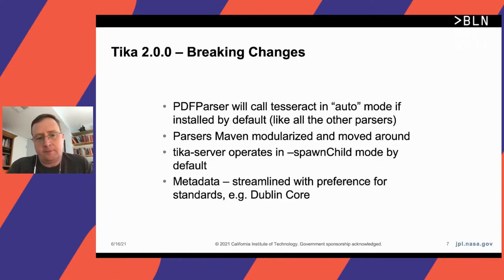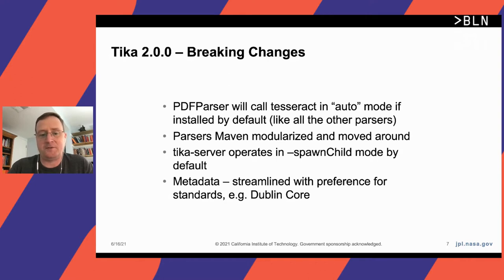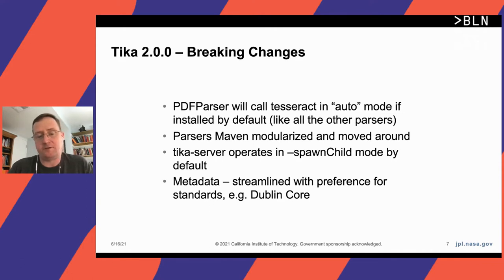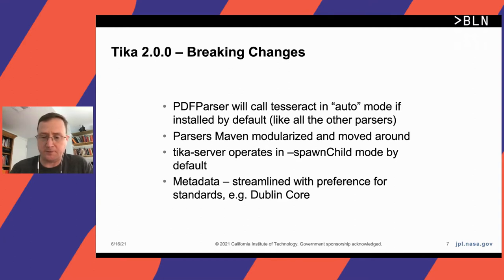Tika 2.0 breaking changes at a high level: if you have Tesseract installed, the PDF parser will call Tesseract in auto mode by default, meaning if it doesn't find enough text on a page or finds bad text, it will run Tesseract, which will be surprising from a performance standpoint. All parsers have been Maven modularized and moved around. Tika server now operates in spawn child mode, and metadata has been streamlined with a preference for standards like Dublin Core.